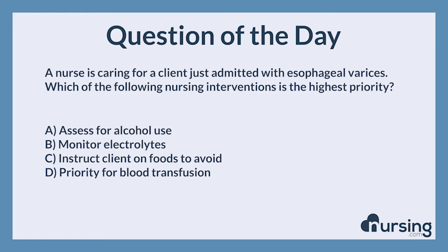Again, a nurse is caring for a client just admitted with esophageal varices. Which of the following nursing interventions is the highest priority? A. Assess for alcohol use. B. Monitor electrolytes. C. Instruct client on foods to avoid. D. Priority for blood transfusion.